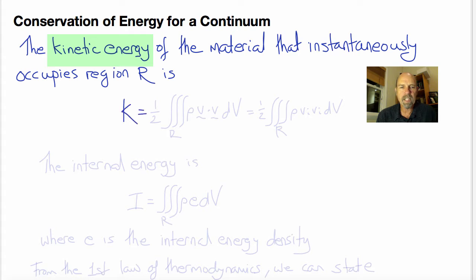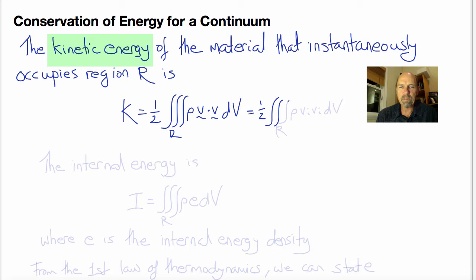The kinetic energy K is one-half of the volume integral over the region R of rho times V dot V with respect to volume, or in index notation one-half rho V_i V_i dV. Energy is a scalar quantity and it's one-half m V squared.